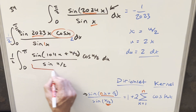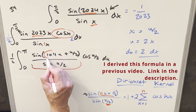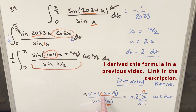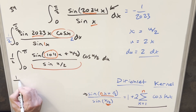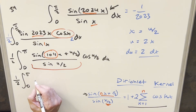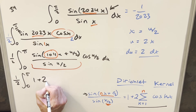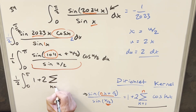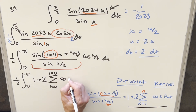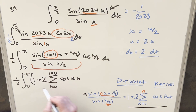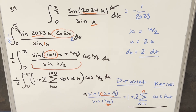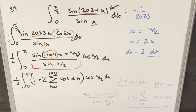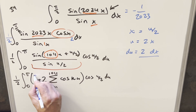Now at this point, this is perfectly set up to use the Dirichlet kernel formula. The n value is going to be 1011, the coefficient on u. Using this, it all transforms: we'll have our 1/2, the same bounds from 0 to π, and this becomes 1 plus 2 times the sum from k=1 of cosine(ku), all multiplied by cos(u/2) du.